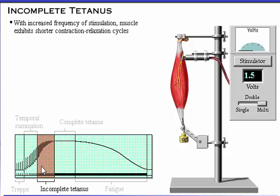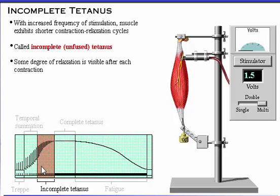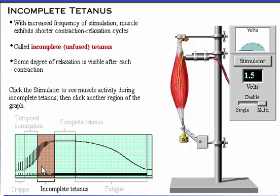With increased frequency of stimulation, the muscle exhibits shorter contraction-relaxation cycles. This condition is called incomplete or unfused tetanus. Note that some degree of relaxation is visible after each contraction. Click the stimulator to see muscle activity during incomplete tetanus, then click another region of the graph.